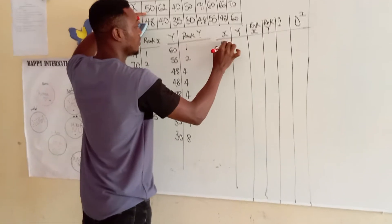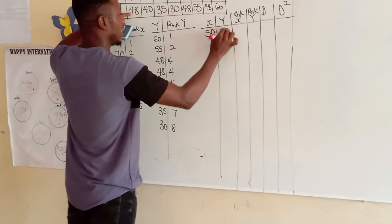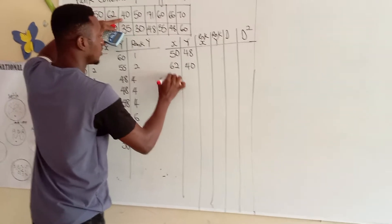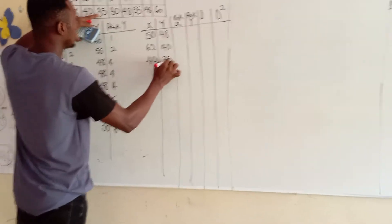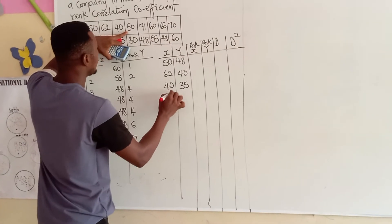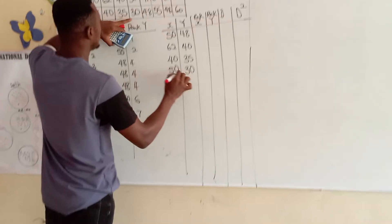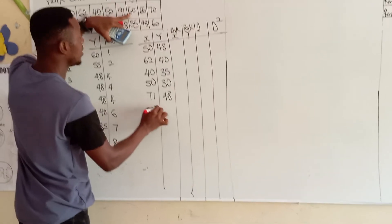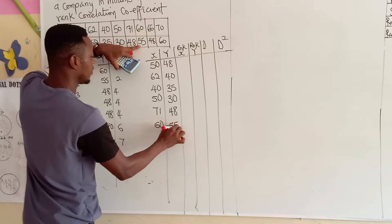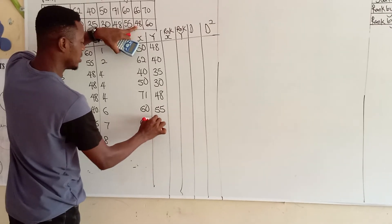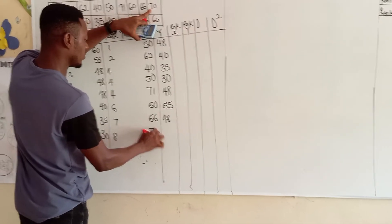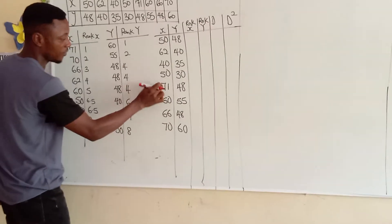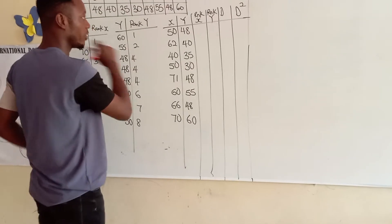Now, I'm going to bring this down, not this arrangement in descending order. Take it the way it is. So, when X is 50, student X got 50, Y got 48. When it got 62, Y got 40. When it got 40, X is 40, Y is 35. When X is 50, Y is 30. When X is 71, Y is 48. When X is 60, Y is 55. When X is 66, Y is 48. And when X is 70, Y is 60.